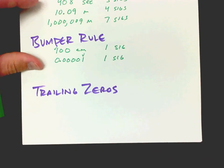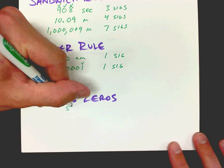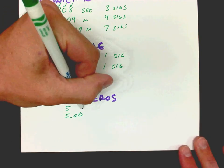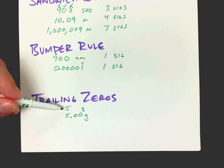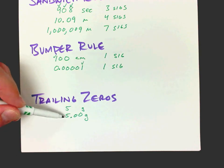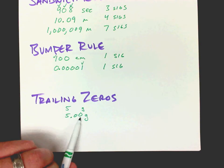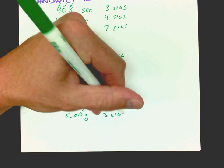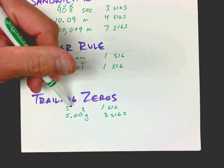Trailing zeros come at the end of the number. Compare the number 5 grams versus 5.00 grams. The 5 grams is not very accurate — it's only 1 sig fig. But 5.00 grams is telling everybody that we measured this out to the hundredths place value. We're showing how exact our measurement was, and because of that, those zeros count — they're significant because they express accuracy. So 5.00 grams is 3 sigs, while plain 5 grams is just 1 sig.